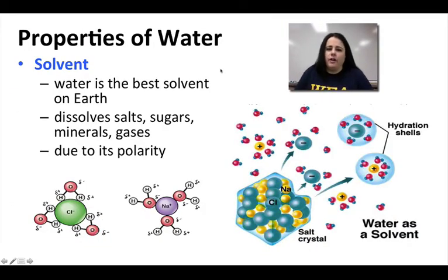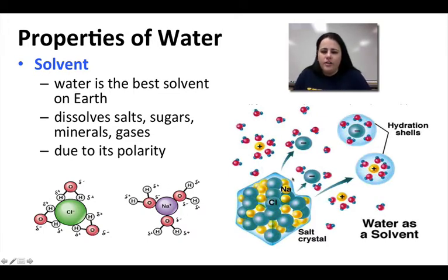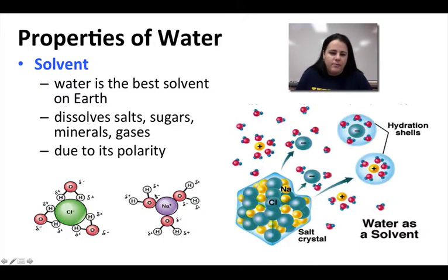Another property of water is that it's a very good solvent — actually the best in the world. Because water is polar, things like salts, sugars, minerals, and gases can easily dissolve in it. The positive and negative parts of the water molecule find the negative and positive ends of those substances. For example, NaCl (salt) is made of sodium ions (positive) and chloride ions (negative). As salt dissolves, it forms hydration shells: the positive hydrogens wrap around the negative chloride, and the negative oxygens wrap around the positive sodium. That's literally how substances dissolve in water.